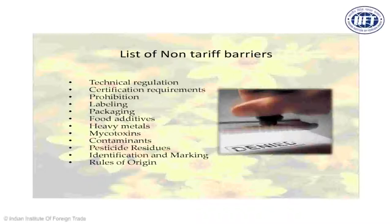For value-added or processed products, you must be particular about food additives used. You also need to be cautious about heavy metals — for instance, Indian spinach was found to have high nitrate content, leading to rejections in the Dubai market; Indian bhindi and okras were being rejected; Indian groundnuts and spices were rejected on the basis of aflatoxin content linked to mycotoxins. Contaminants are another concern — even if the product is good, the packaging material in contact with the food product may cause rejection due to contaminants. You have to work at two levels: contaminants in the packaging and contaminants in the product itself.